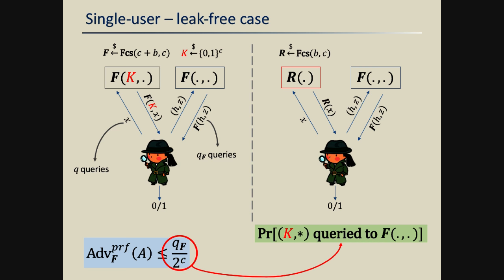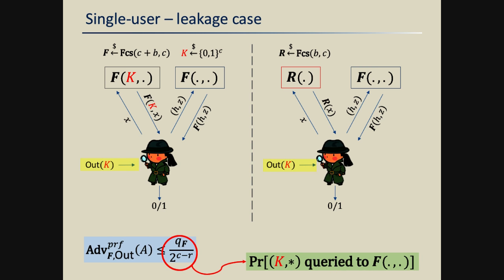If we have leakage — out(k) additionally given to the adversary — the analysis carries over very naturally. Now the adversary learns R bits of the key but still has uncertainty over the remaining C minus R bits. All that happens is that the denominator in the bound changes from 2 to the C to 2 to the C minus R. That's a very easy argument.